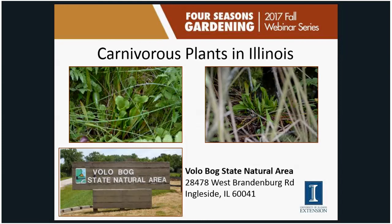For finding carnivorous plants in the wild in Illinois, Volo Bog State Natural Area in Ingleside, north of Chicago, has purple pitcher plants. Many carnivorous plants were historically found in the Chicago area, which used to be quite boggy, but most of that habitat has been lost to urban development. Volo Bog is one publicly accessible location known to have them.